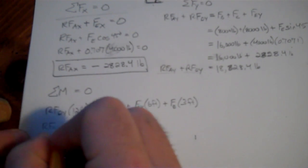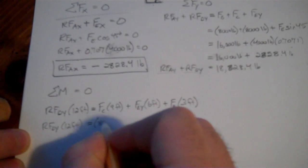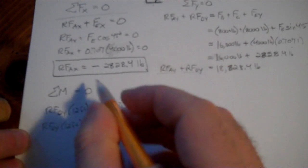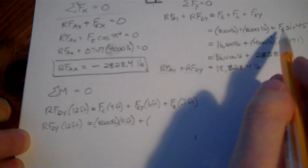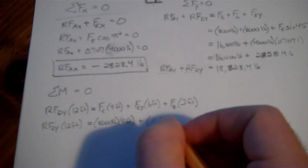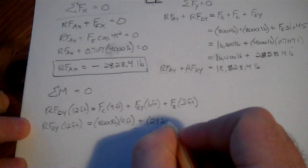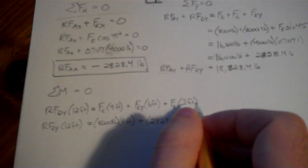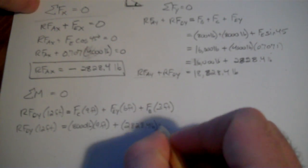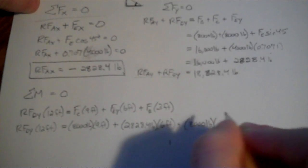So I have RFDy at a distance of 12 feet. I have FC at a distance of 9 feet. I have FEY, the Y component of that, not the X, at a distance of 6 feet. And I have FB at a distance of 3 feet, all from point A, joint A. All right, so RFDy times 12 feet. Let's plug some values into here. FC is 8,000 pounds, times 9 feet. FEY, just like FEX, was FE sine of 45. So 4,000 times the sine of 45 degrees, that was 0.707. I'm going to skip a step here, break my own rules, and already put in the 2,828.4 pounds.